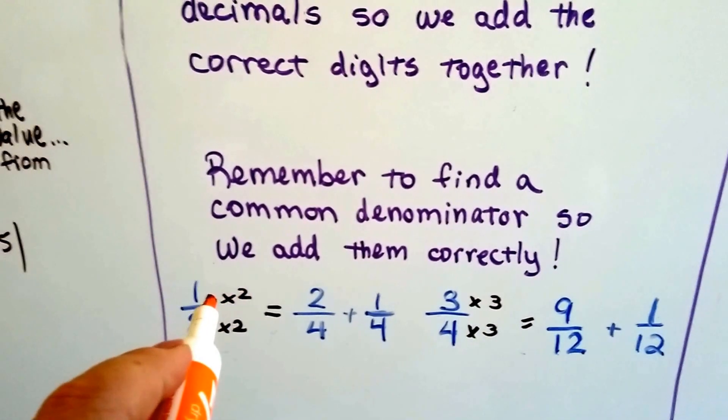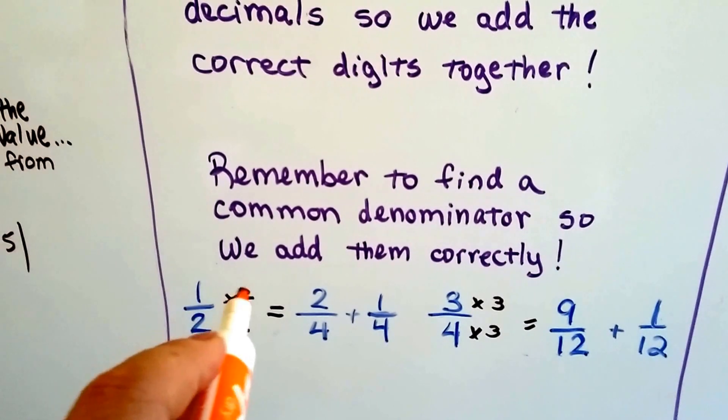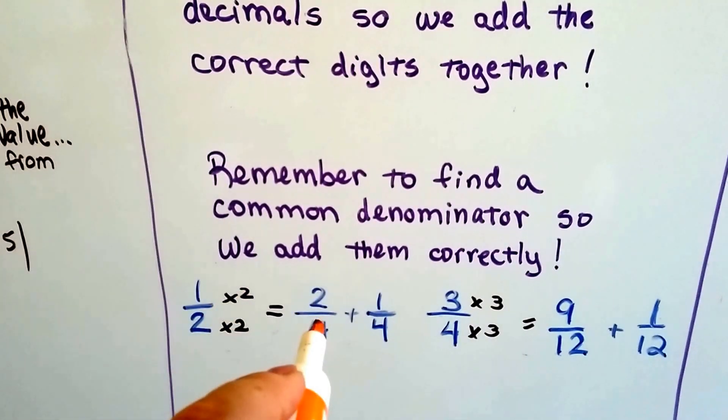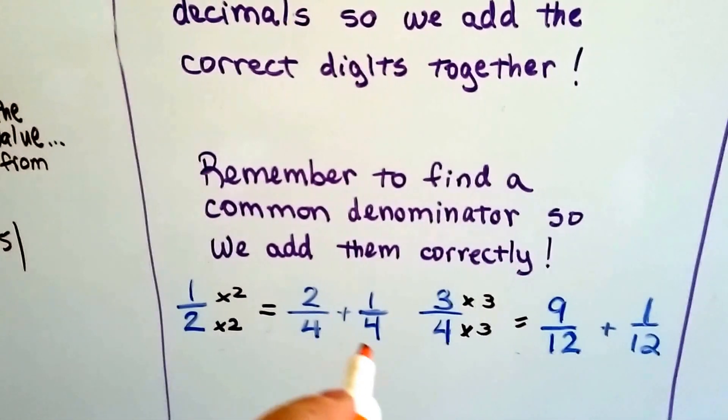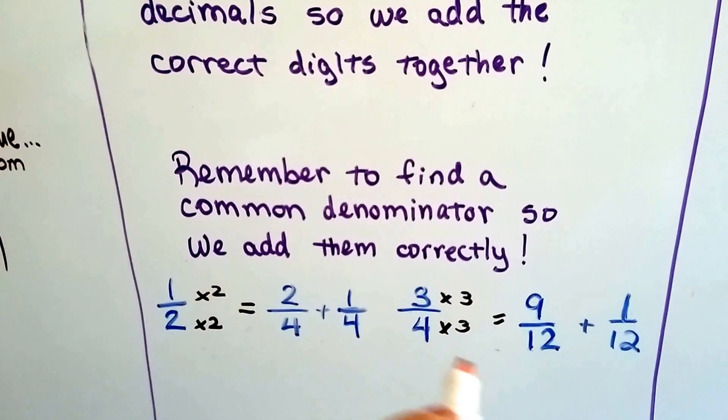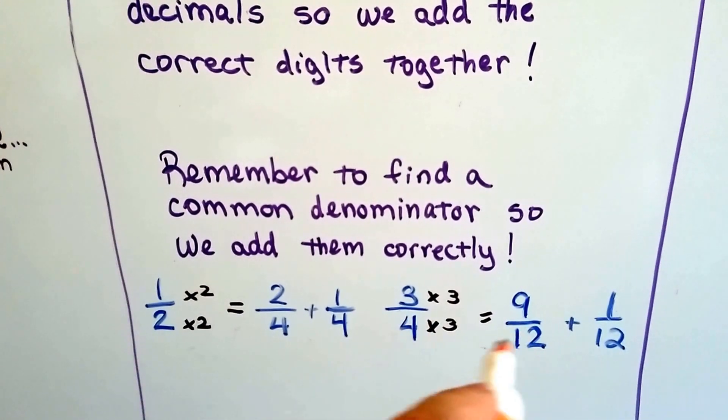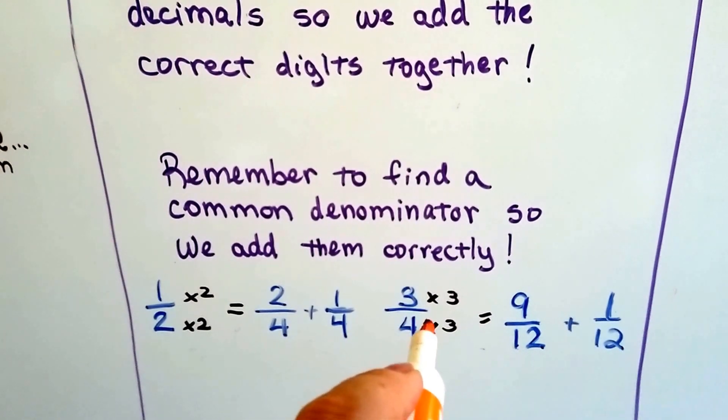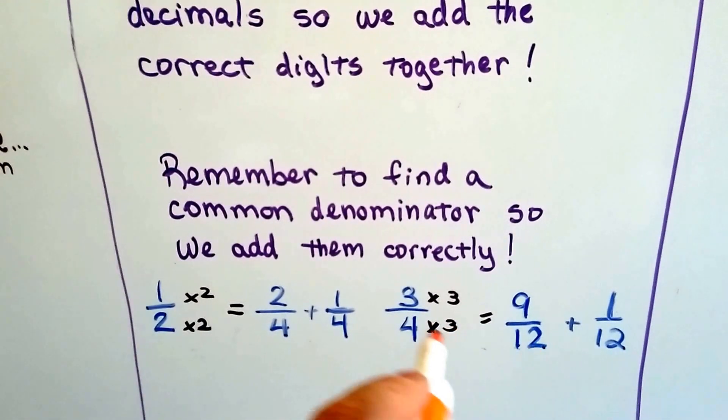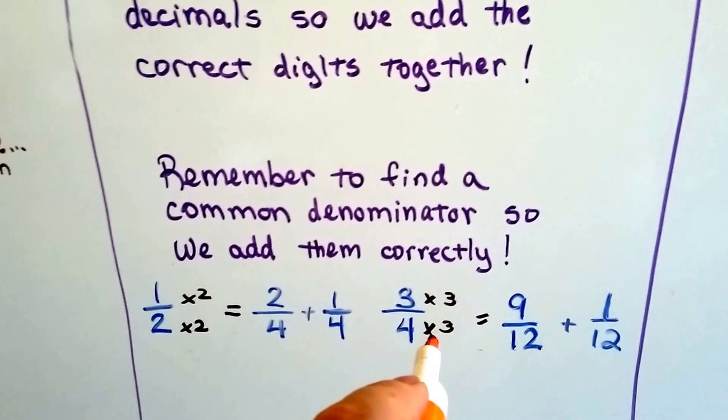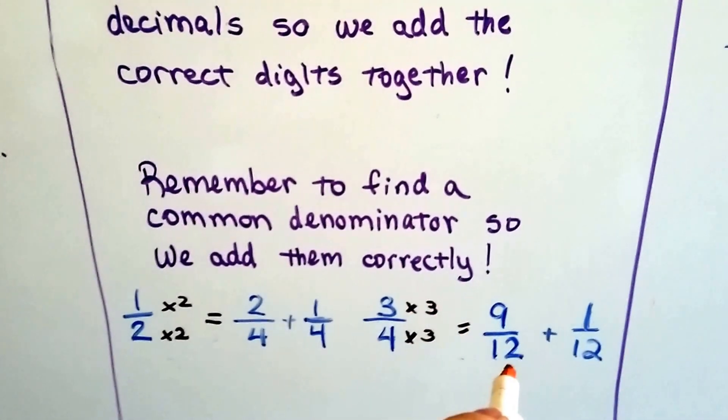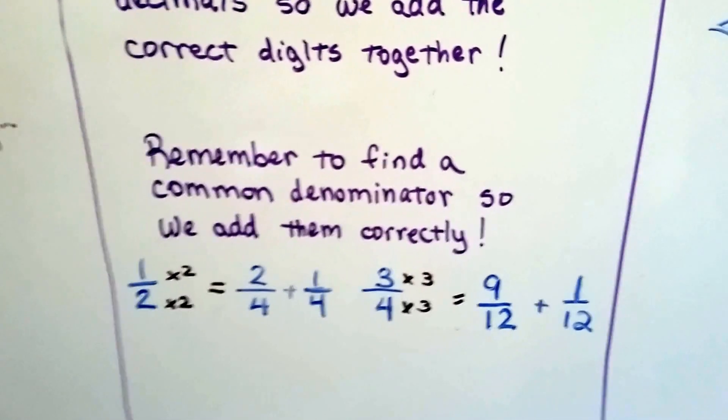And then the numerator gets jealous, it wants to be multiplied by 2 also. So, it becomes 2 fourths, now we can add it to the 1 fourth. And then the same, if we wanted to add 3 fourths to a 12, we would have to turn this 4 into a 12 so that they had a common denominator. 4 needs to be multiplied by 3 to get to 12's house. 3 gets jealous, it wants to be multiplied by 3. So, we have 9 12ths and now we can add it to the 1 12th. Do you remember that?